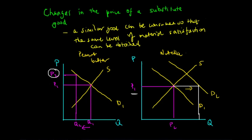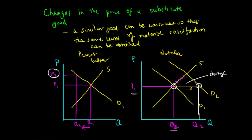The demand for Nutella is now at Q2. Because the original equilibrium quantity was at Q1 and the new quantity demanded is at Q2, there is a shortage in supply — supply is at Q1 but demand is at Q2. Producers will recognise this shortage and slowly increase supply, experiencing an expansion. Once they reach the new equilibrium point they will stop, resulting in a new equilibrium at P2 with a new equilibrium quantity of QE.